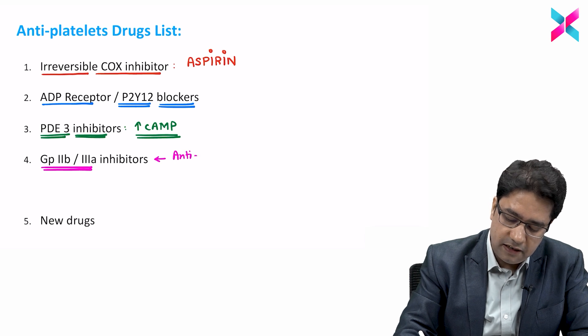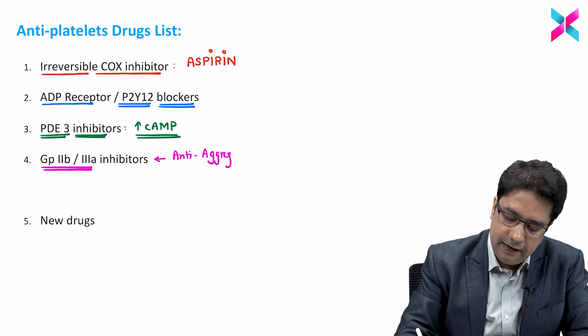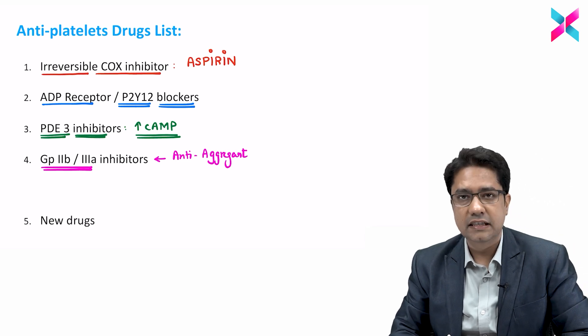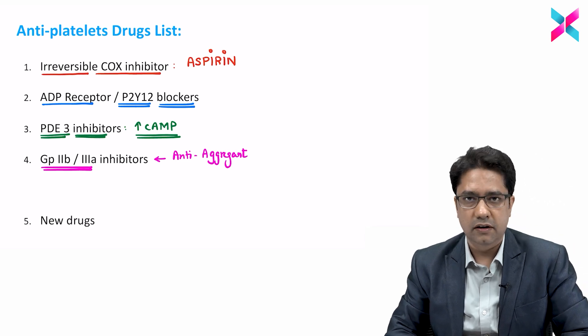GP2B3A inhibitors are known as anti-aggregant drugs. After this, we will discuss certain new drugs.